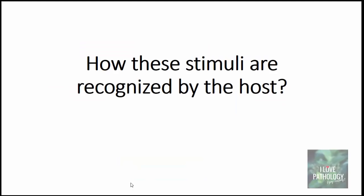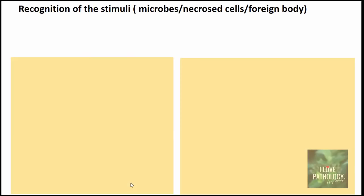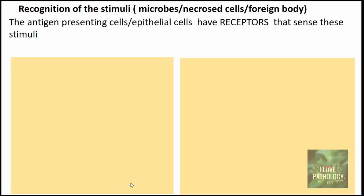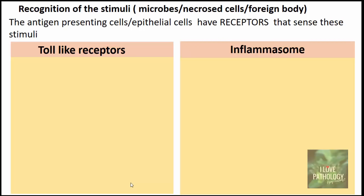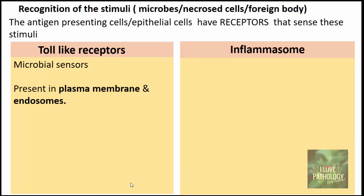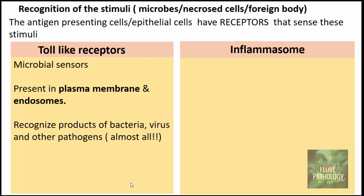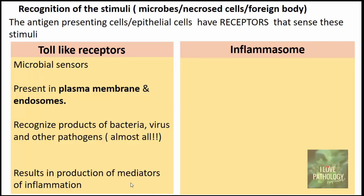It is important to understand how these stimuli are recognized by the host. These stimuli are recognized by receptors present on antigen-presenting cells or epithelial cells. The first and foremost are Toll-like receptors, which are microbial sensors present in plasma membranes and endosomes. They recognize products of bacteria, viruses, and other pathogens, and also result in the production of mediators of inflammation.